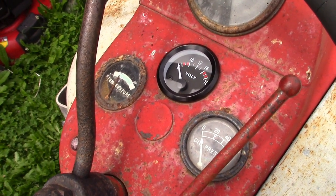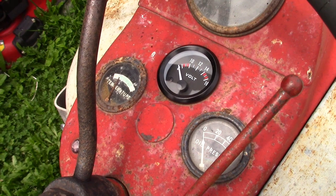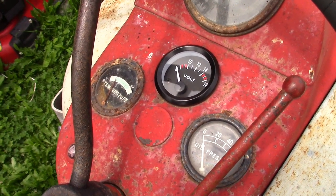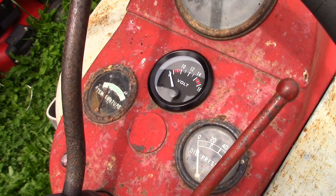The voltmeter will give you a voltage state or condition of the battery. Fully charged it will read between 13 and 14.2 volts.